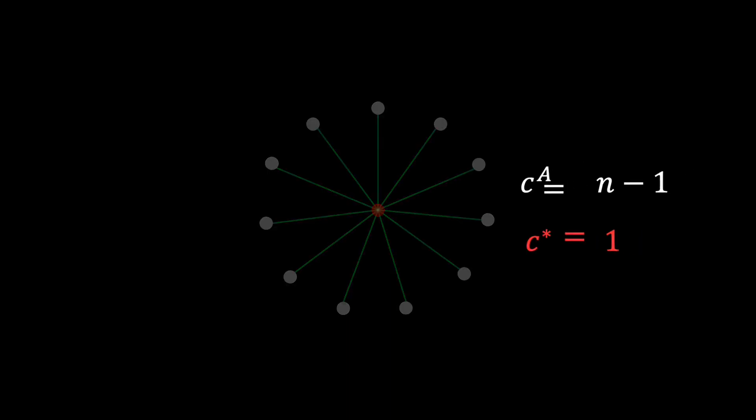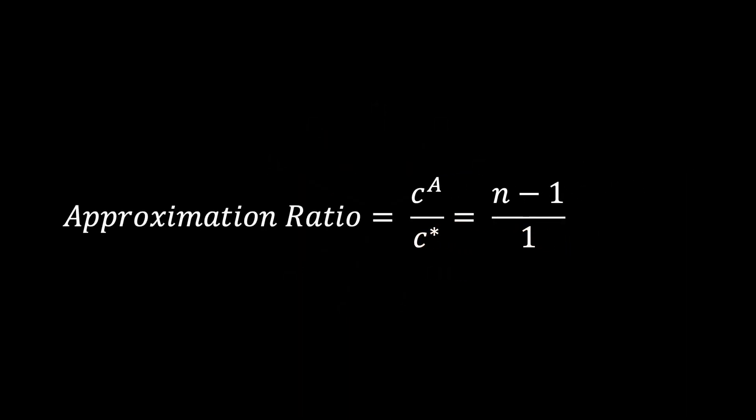The approximation ratio is the cost of the algorithm divided by the optimal cost C star in the worst case. The question is, how bad can this ratio get? We say that an algorithm A is an alpha approximation algorithm if for every possible input of the problem it returns a solution with a cost of at most alpha times C star. So can we get better guarantees?